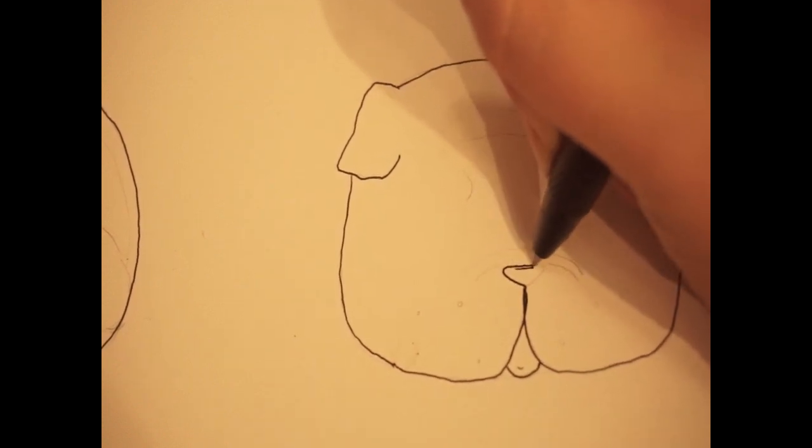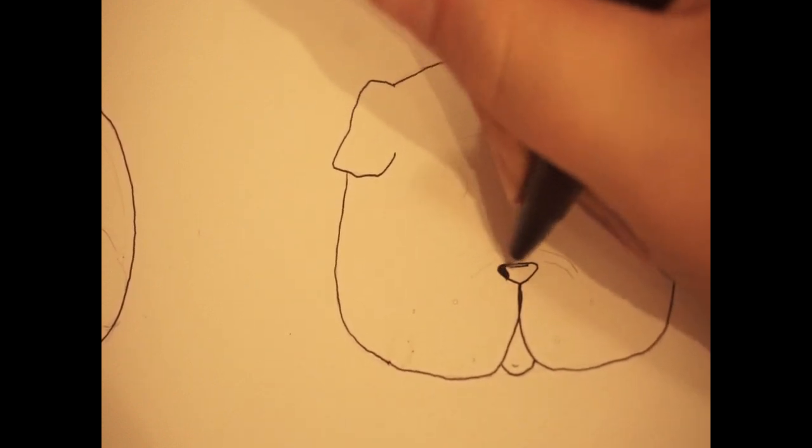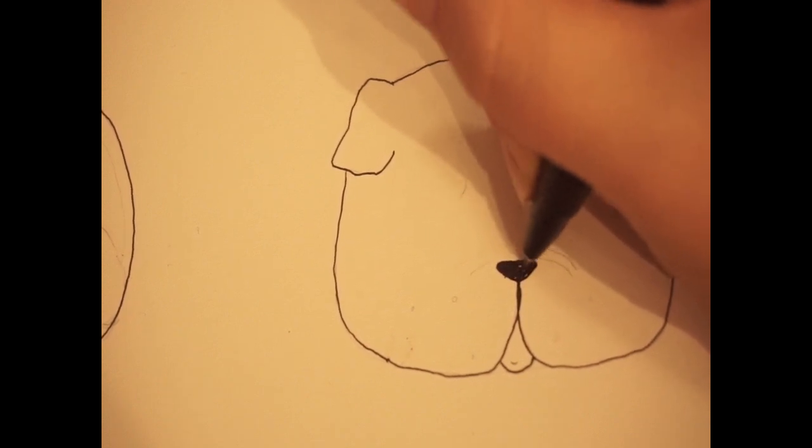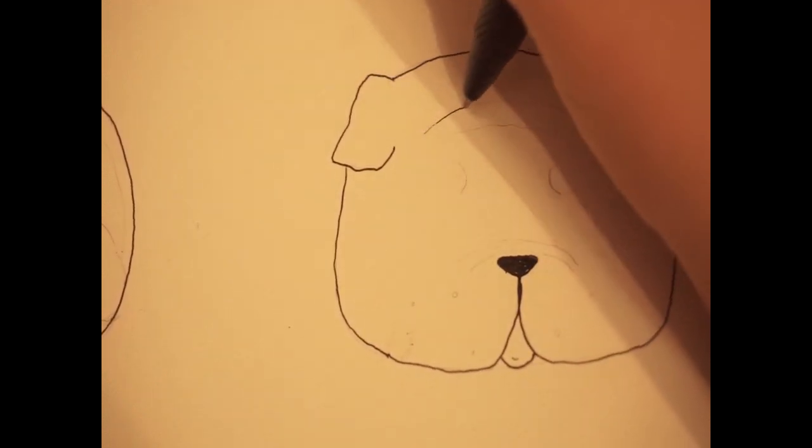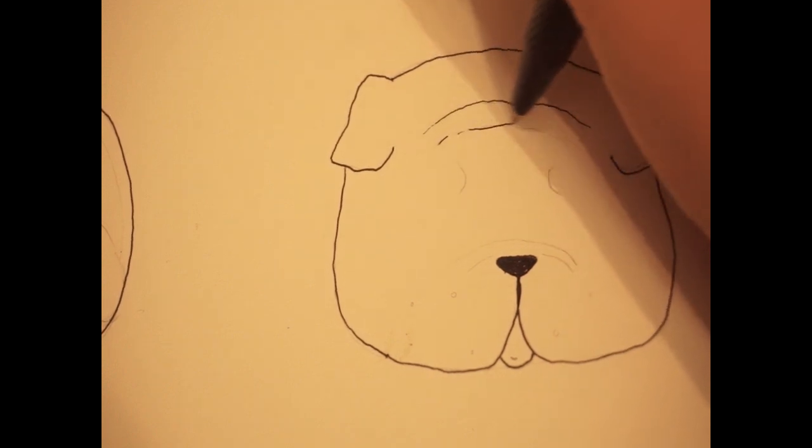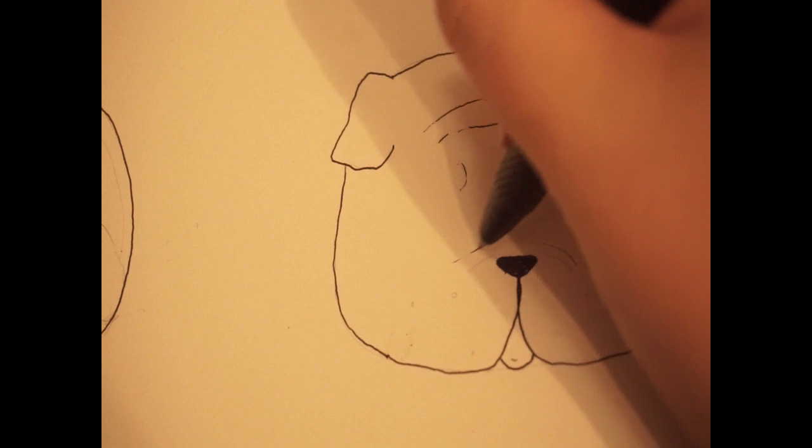And when you get to the mouth part, you want there to be a little space on each side of the chin so that you can see that the cheeks are saggy. And then of course add all the little fun wrinkles.